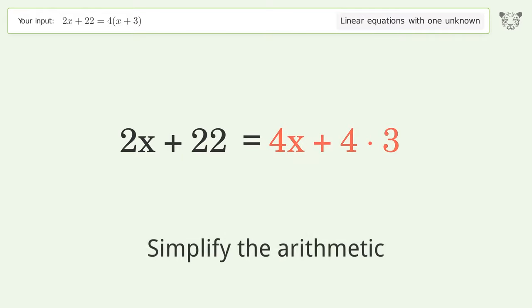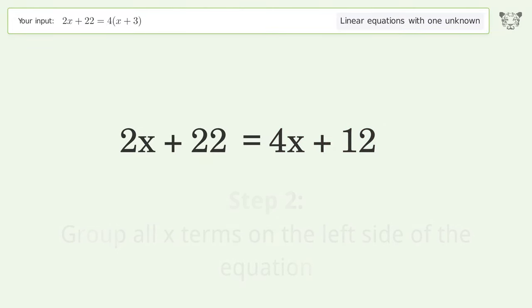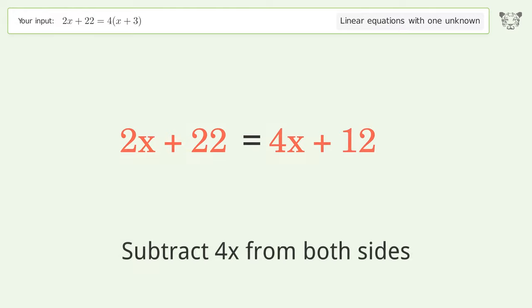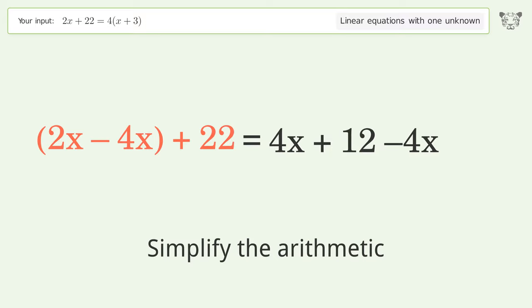Simplify the arithmetic. Group all x terms on the left side of the equation. Subtract 4x from both sides. Group like terms. Simplify the arithmetic.